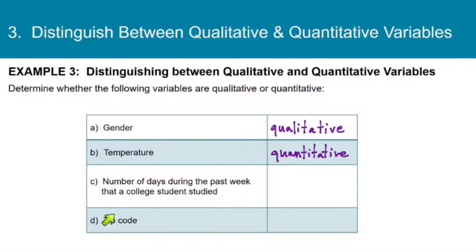Number of days during the past week that a college student studied, that is quantitative as well. Because I can say Joe studied three days and Jim studied five days, therefore Jim studied two days more than Joe. What about zip code? Zip code is numbers, but the numbers don't have any meaning beyond just being a label. So although it's numbers, a zip code is qualitative data.